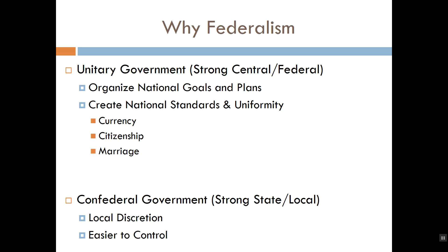One approach is the unitary system of governance. In a unitary government system, basically all lawmaking authority is concentrated in the hands of the federal government. Modern examples include China and France today, and historical examples include the British Empire prior to our declaration of independence — so we lived under a unitary government before we broke off and became our own country. Once we declared independence, we fled to the opposite extreme with the Articles of Confederation, which governed our country as a confederacy for the first ten or so years of the nation's history.